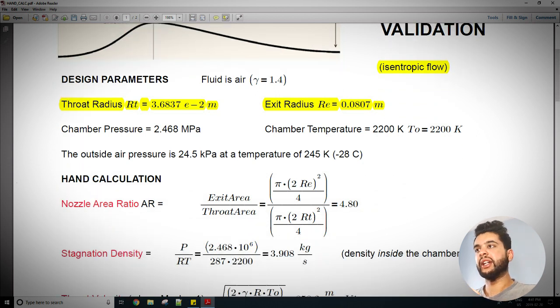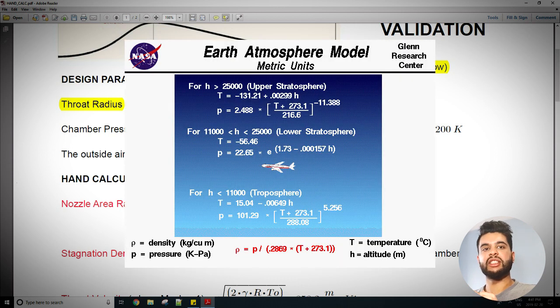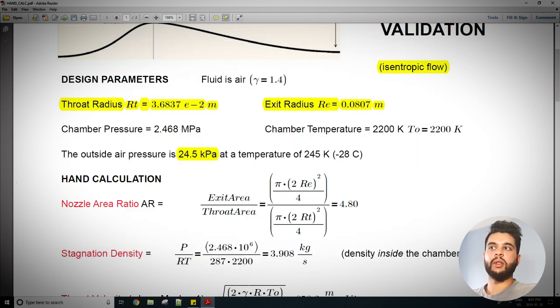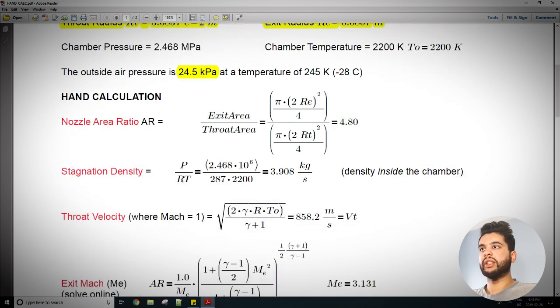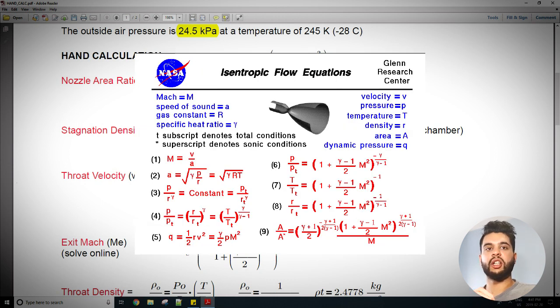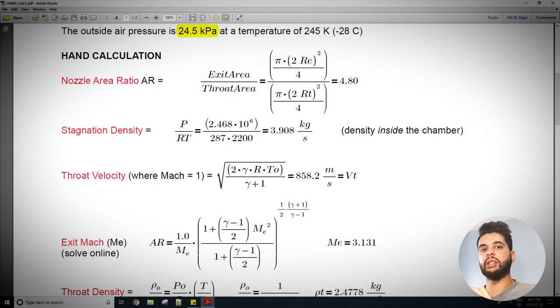We have air pressure at about 2.5 megapascals and about 2200 kelvin. Next we need to look at the air pressure outside. For this problem we can assume that this rocket is going somewhere in the atmosphere with a very low pressure and temperature. The atmospheric pressure is about 24.5 kilopascals and a temperature of about 245 kelvin or negative 28 celsius. With that being said, we can do this by hand because a rocket engine nozzle using air is quite a simple calculation since we can assume isentropic flow. You can get isentropic flow formulas from the internet, from this NASA website and many more sites online.